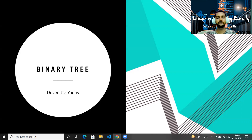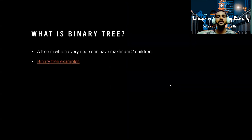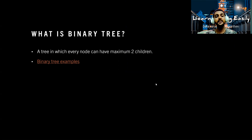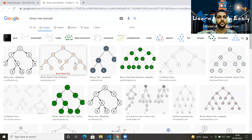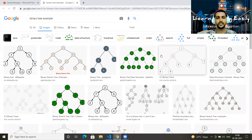The first question which will come to your mind is: what is a binary tree? A binary tree is nothing but a tree in which every node can have a maximum of two children. That is known as the binary tree. Let me show you some examples from Google — if you search on Google, you will get these examples to understand the binary tree.